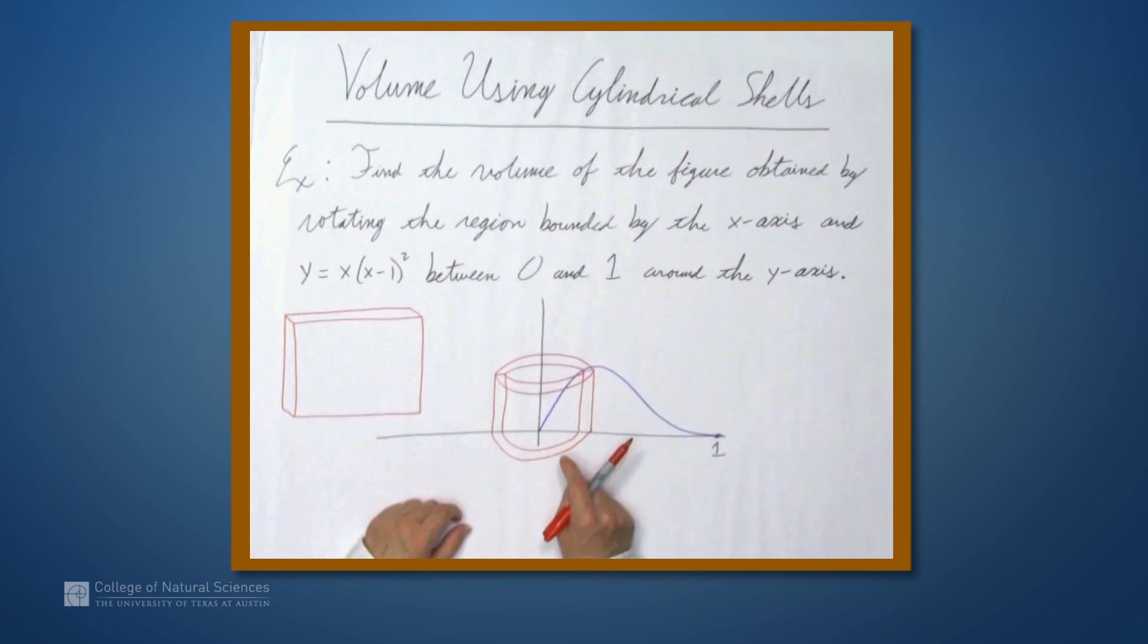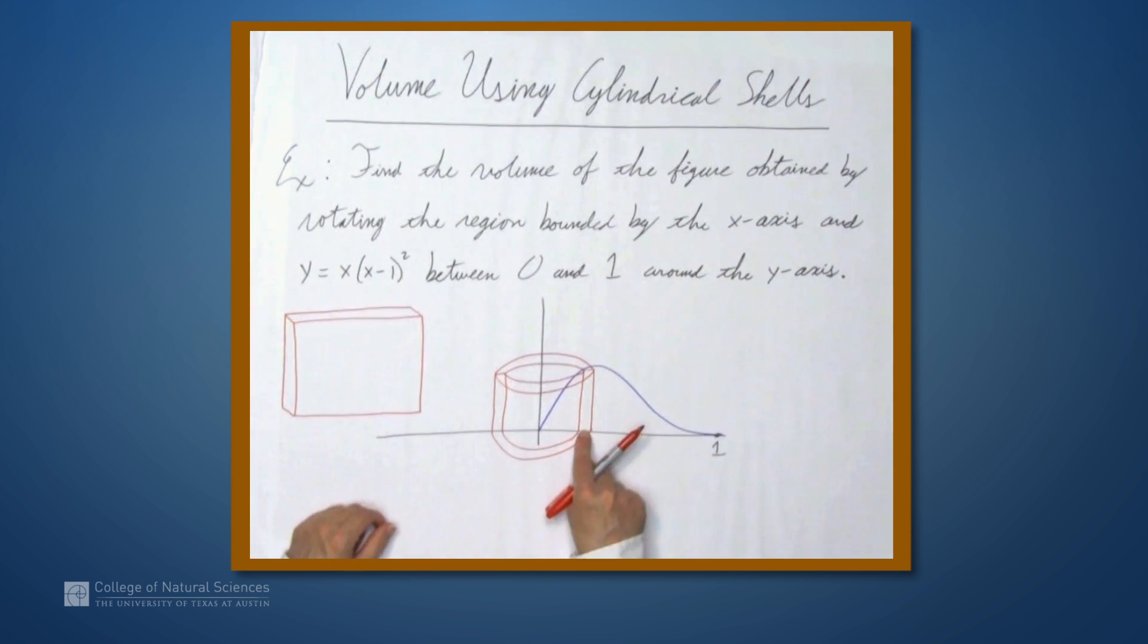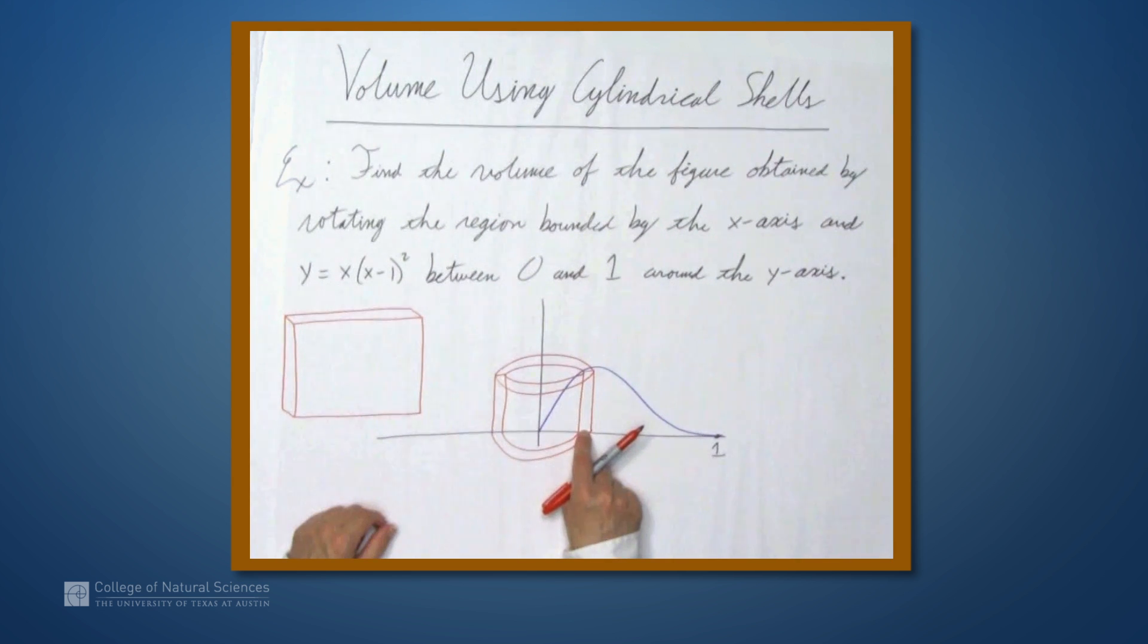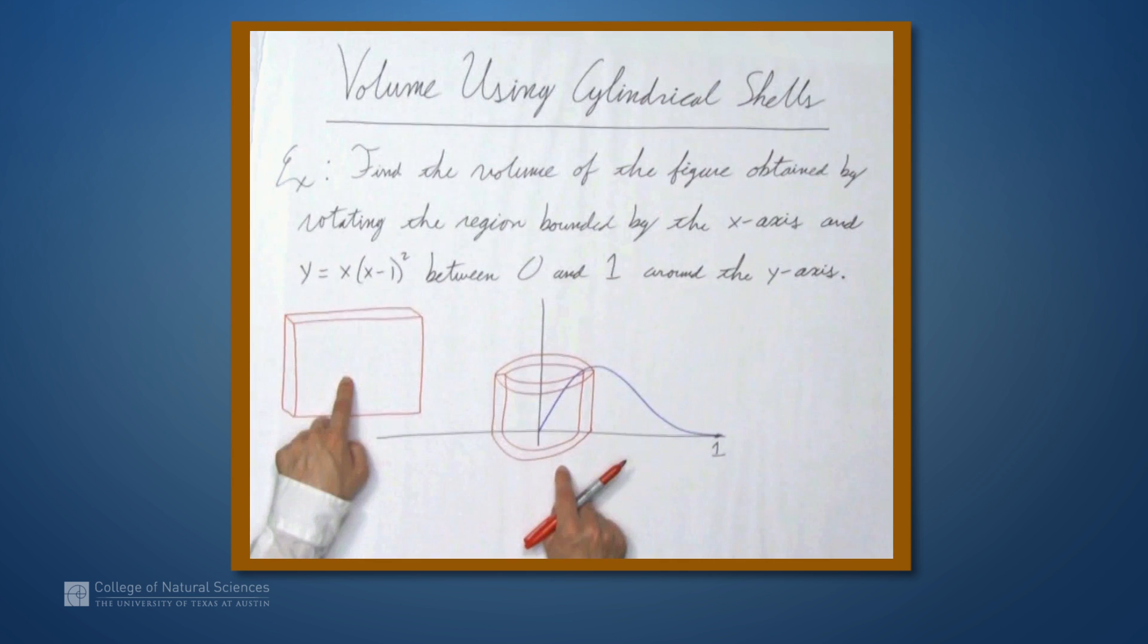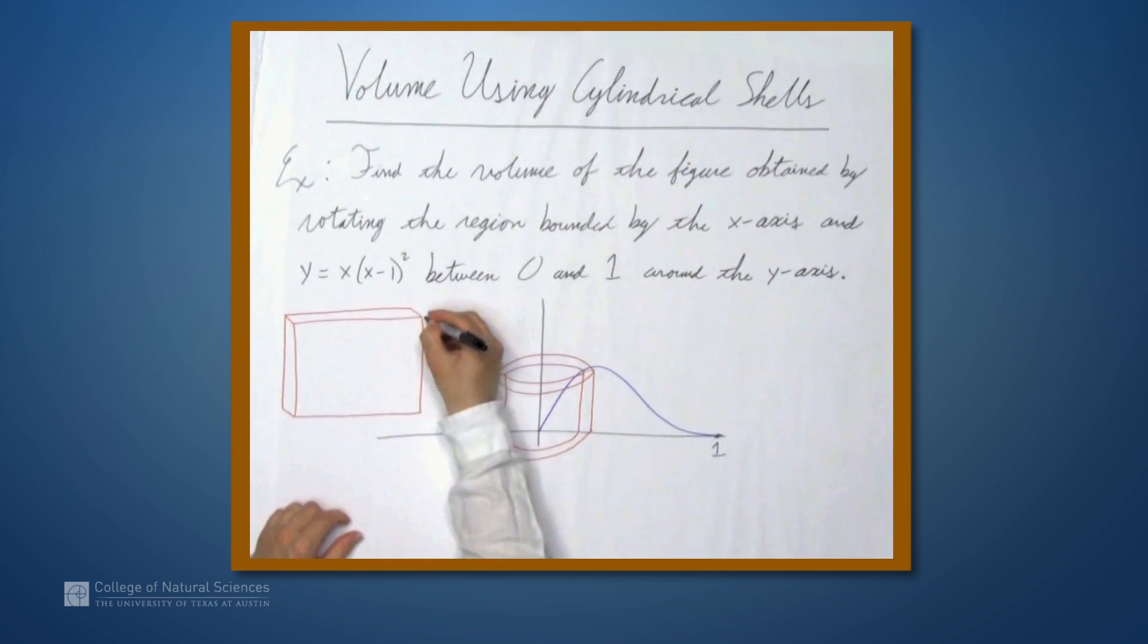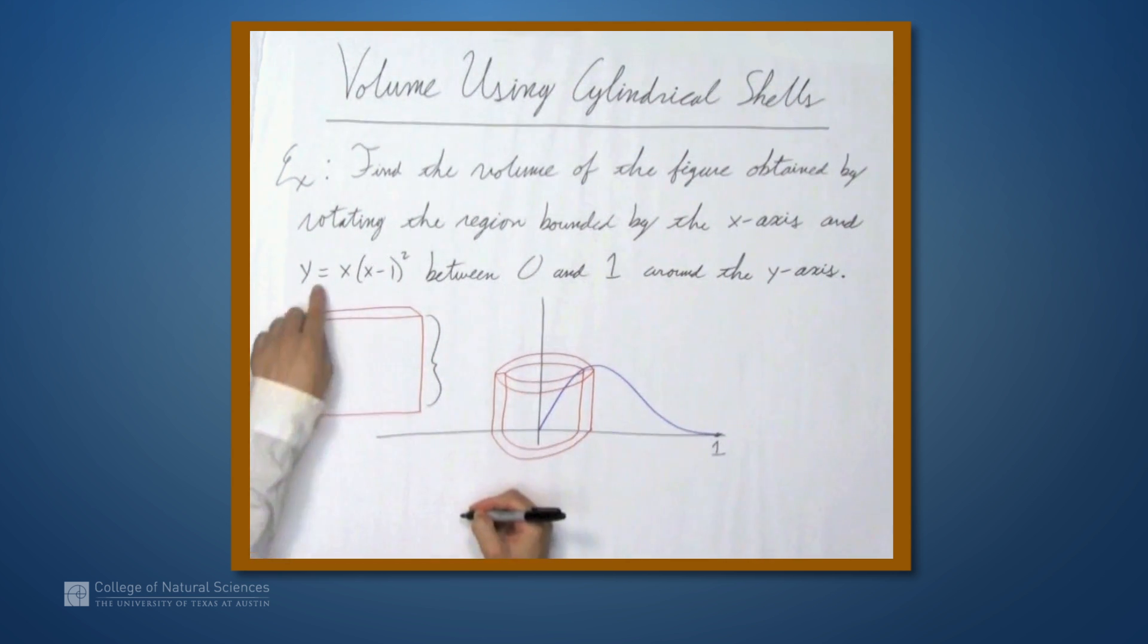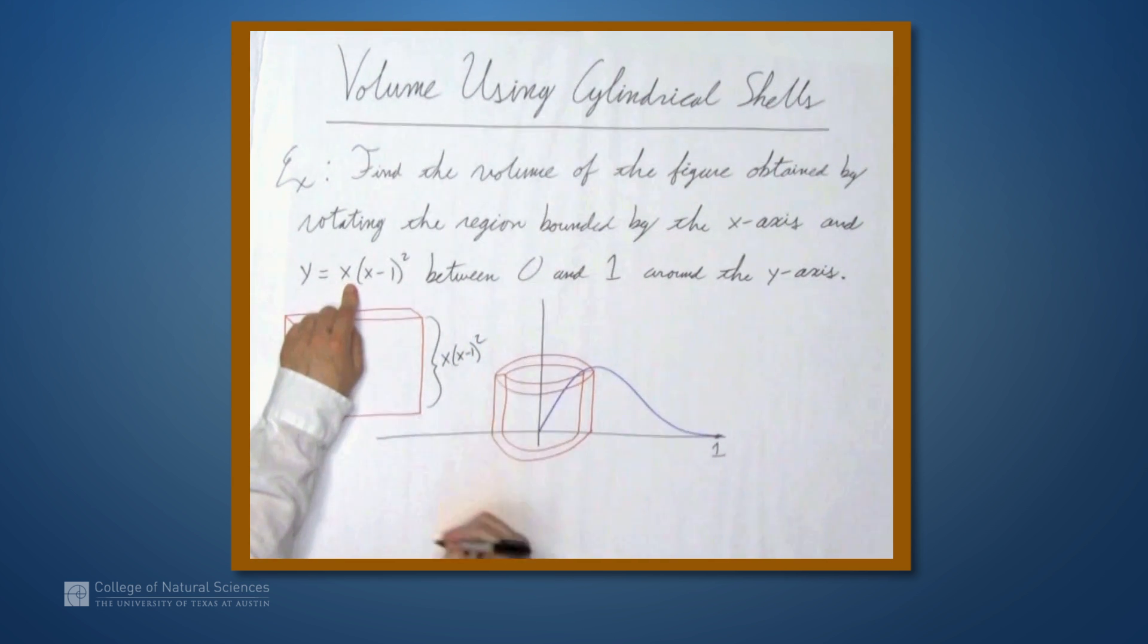So we're going to set up an integral. Instead of using the formula for the volumes of these rings, we're going to use the formula for the volumes of these cylindrical shells. And to find the volume of the shell, we can look at this rectangular solid. So, the height of this rectangular solid is the height of the cylindrical shell, and the height is determined by the value of the function. So, this, in this case, is just going to be x times (x-1) squared.